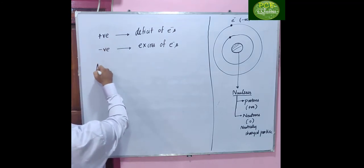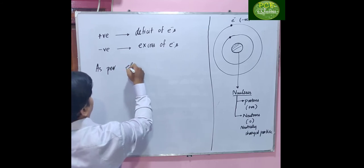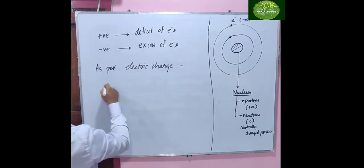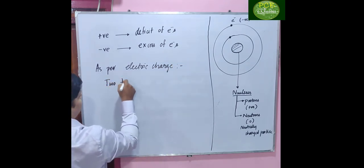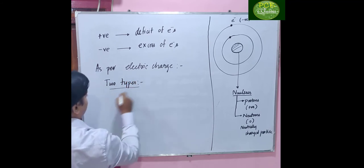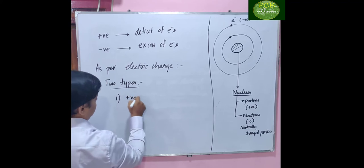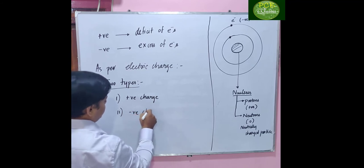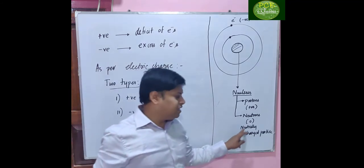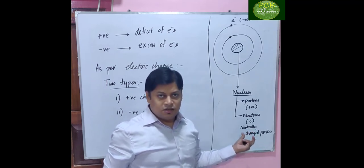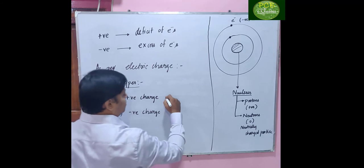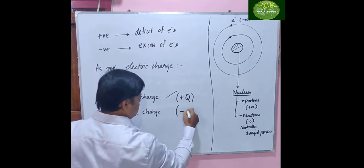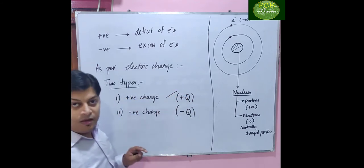As far as electric charge is concerned, charges are of two types: one is positively charged and another is negatively charged. We are not bothered about neutrons because those are neutrally charged.